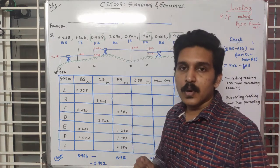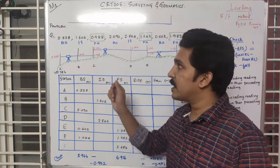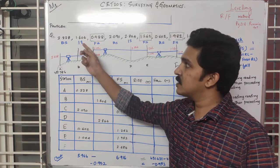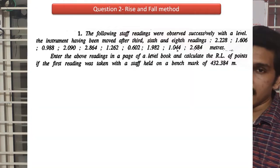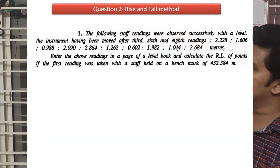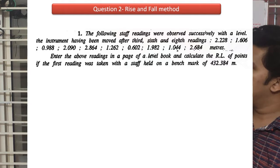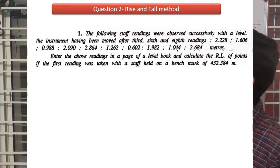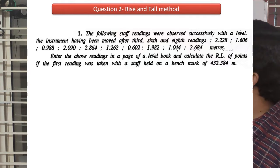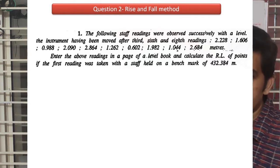So we take up the same problem from the last class. The problem has given several values like 2.2, 2.8, 1.6, 6 and so on, and the instrument is shifted at the 3rd, 6th, and 8th values.